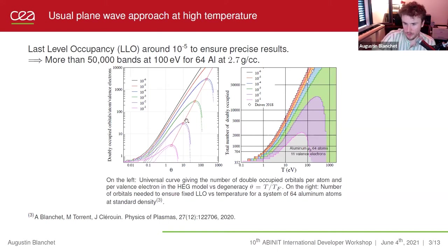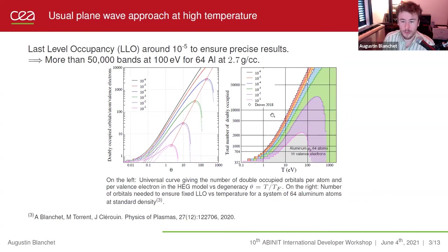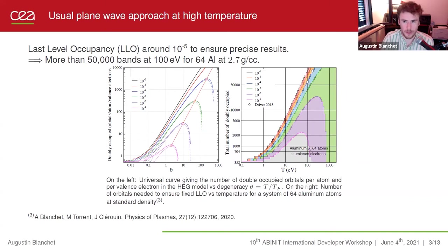On the left plot, the more we want to have a small last-level occupancy — shown by the color of the curves — the more orbitals we need to take into account, until it reaches a maximum. After this point, all the curves go down, due to the behavior of the chemical potential moving to negative energy values as the temperature rises. On the right side, for a practical case of a 64 aluminum atom system, to get 10^-4 last-level occupancy at 100 electron volts, we need at least 50,000 bands. So it can be very complicated to simulate.